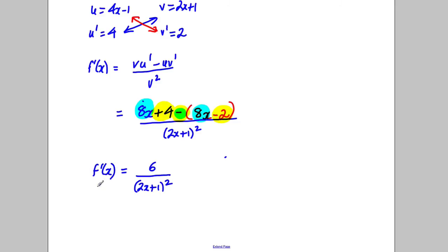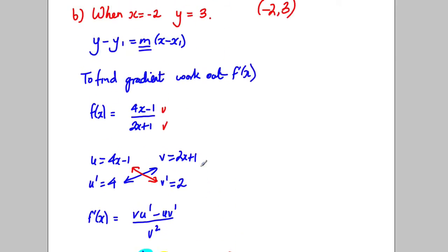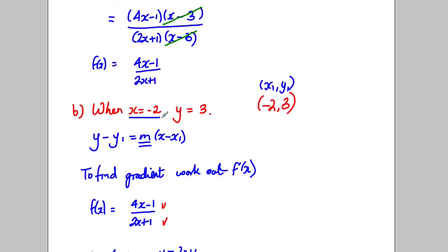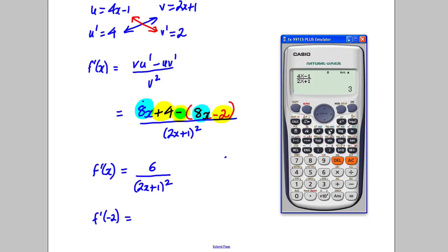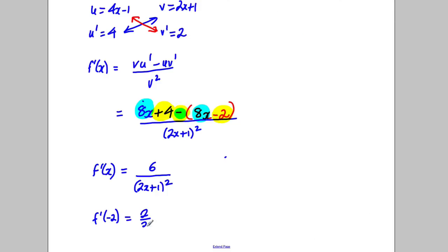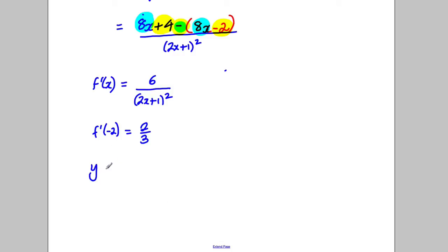We want the gradient at x = negative 2, so we compute f'(negative 2). Using a calculator with 6 over (2x add 1)² and x = negative 2, we get 2 thirds. Therefore the gradient m = 2 thirds.